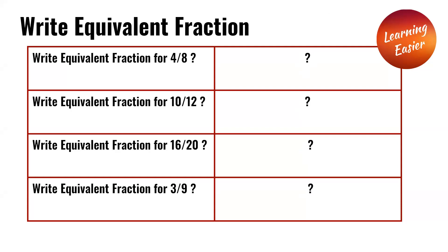Write equivalent fraction for 16 over 20. An equivalent fraction is 4 over 5 for 16 over 20 because we divided both sides by 4.